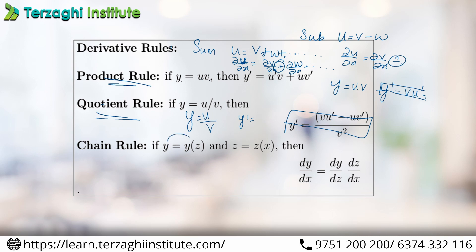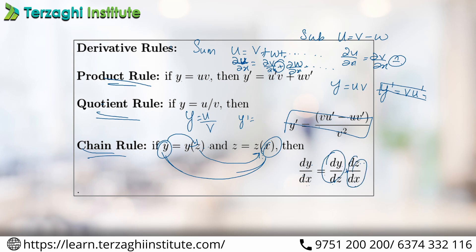This is the chain rule. Y depends on z, and z depends on another variable. Differentiation: dou u — so dy by dx is equal to dy by dz into dz by dx. That is z cancels. This is the chain rule. This covers basic operations including partial differential equations.